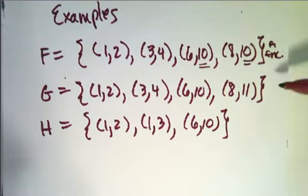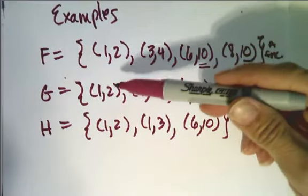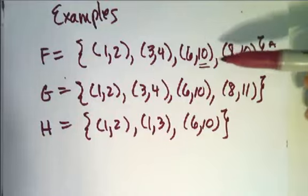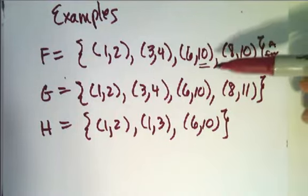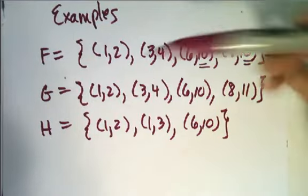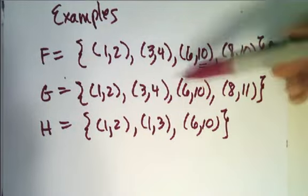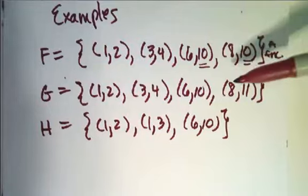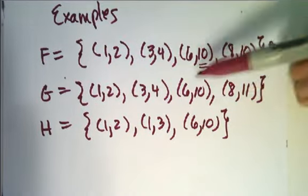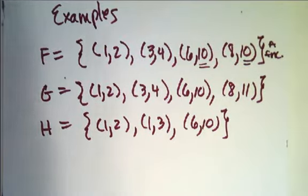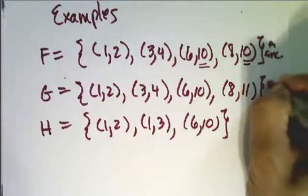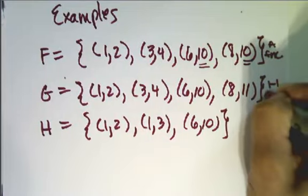Now let's look at G. I have the pairs (1,2), (3,4), (6,10), and (8,11). Again, I see I have unique first coordinates, and this time I also have unique second coordinates. So not only is G a function, it's a one-to-one function.